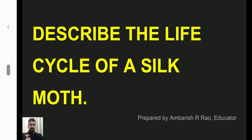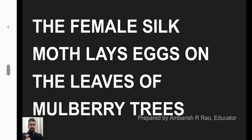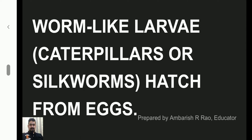Describe the life cycle of a silk moth. The female silk moth lays around 400 eggs on the leaves of mulberry trees. The worm-like larvae, caterpillars or silkworms, hatch out from these eggs.